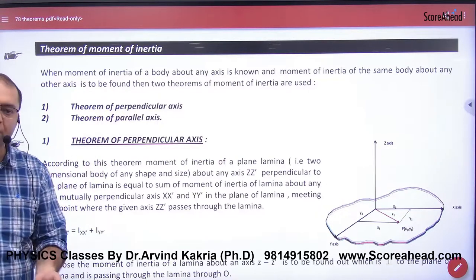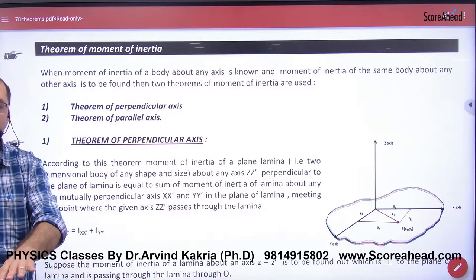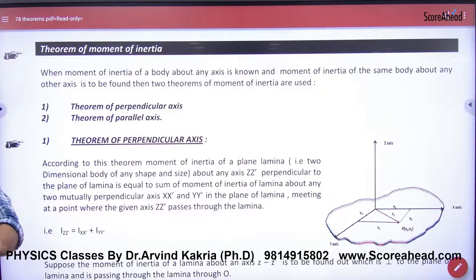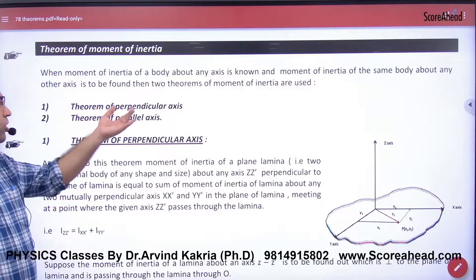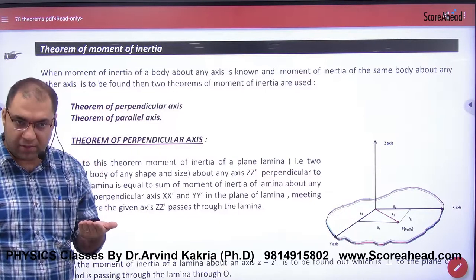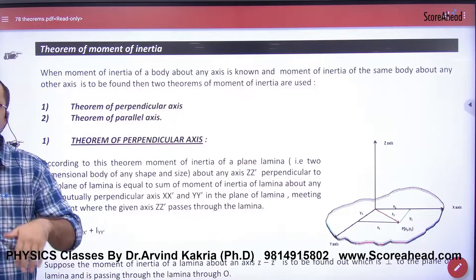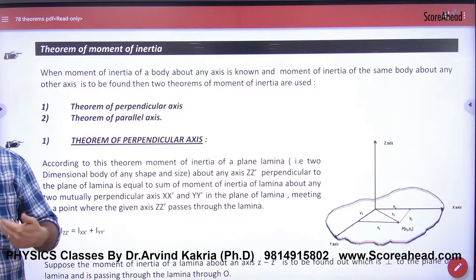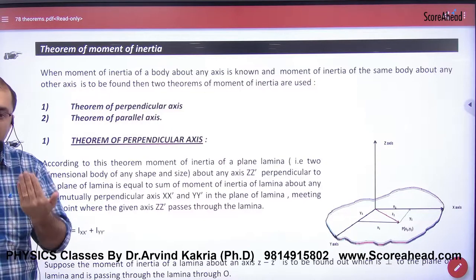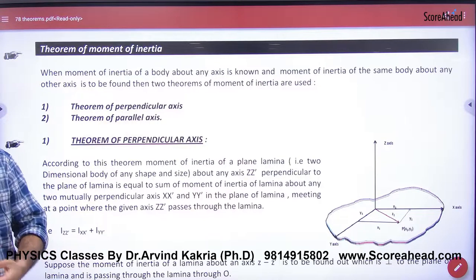We will look at numericals in different figures. The first is the theorem of perpendicular axis. That means if I know the moment of inertia about one axis, I can find it about another axis that is 90 degrees to the first axis.